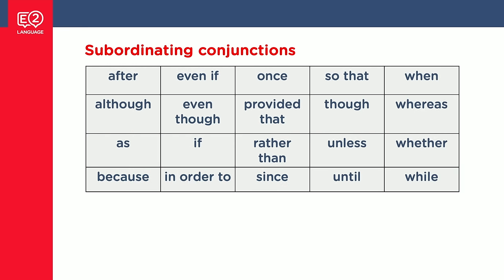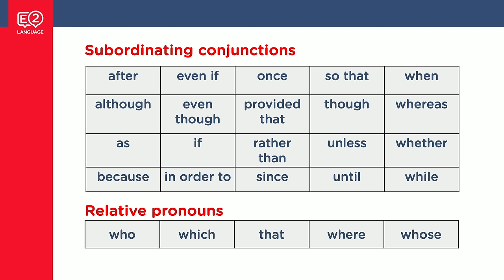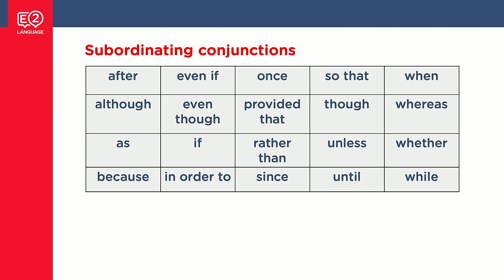Here are a bunch of subordinating conjunctions — you probably already know them and use them all the time. Words like after, although, if, once, since, when, while. And here are some relative pronouns: who, which, that, where, whose. Today I'm not really going to look at relative pronouns — we'll do that in our other live classes, or you can work with your teacher in a one-on-one tutorial. We're just going to look at the subordinating conjunctions.